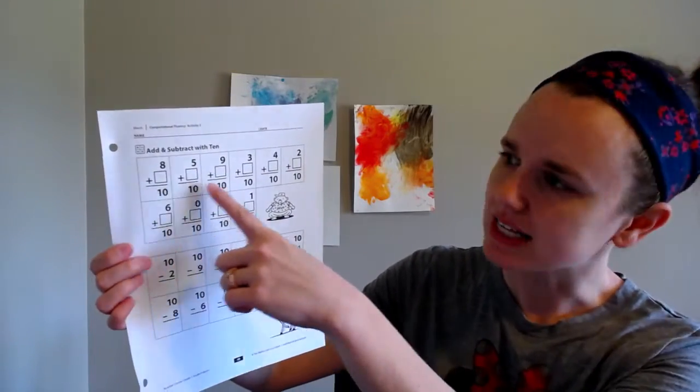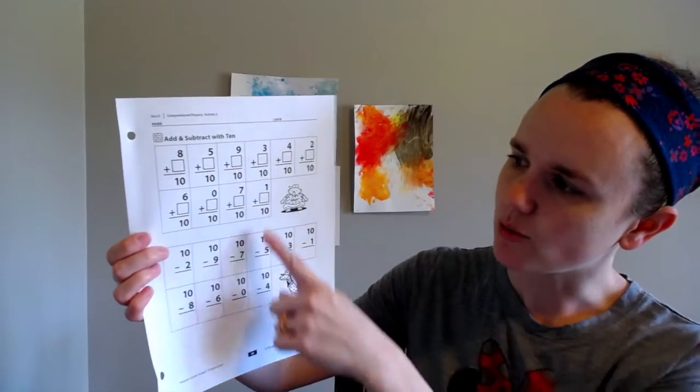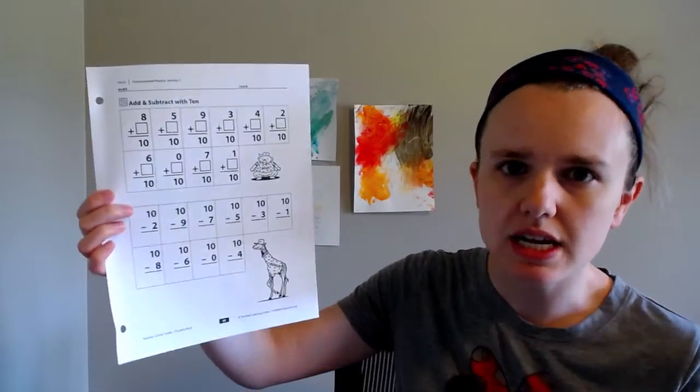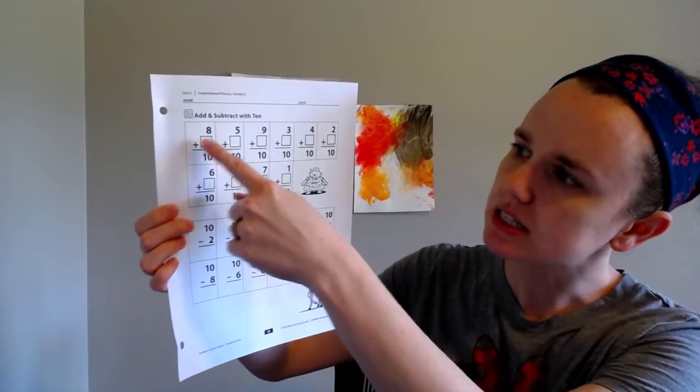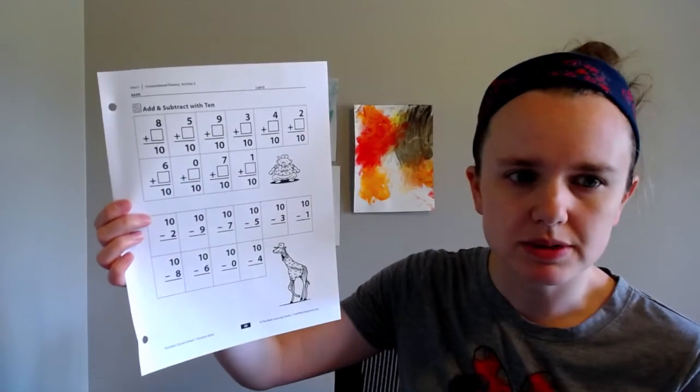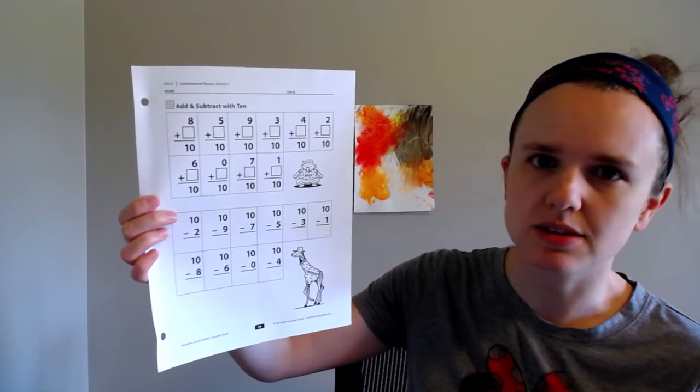Our top part has different numbers that all want to add up to make 10 and so they need a buddy to go in this box here to make 10. You should be able to do this so quickly because you know how tens work.